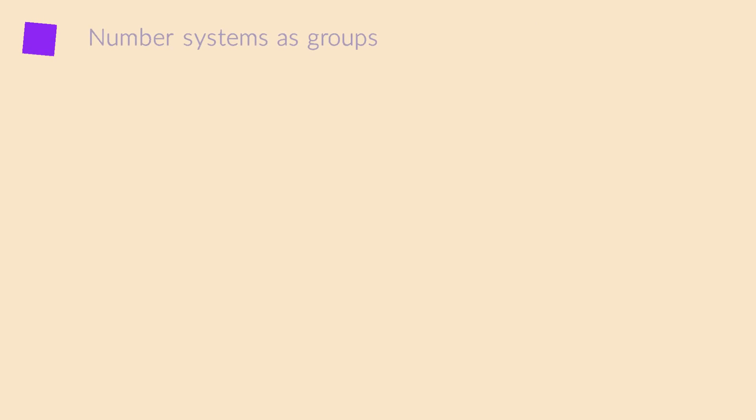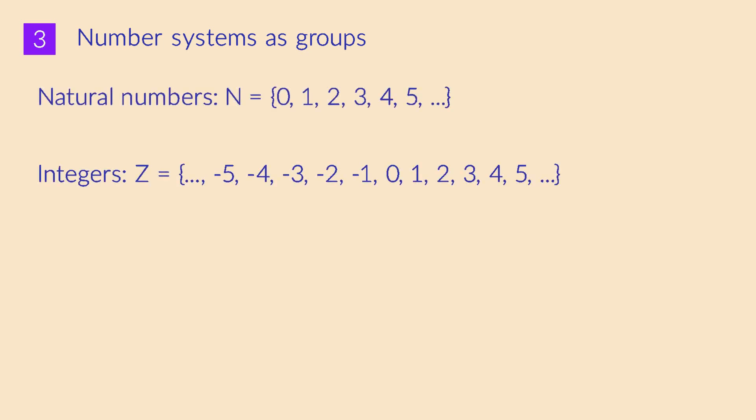I want to close this video by going over the well-known number systems, to see which ones can be turned into groups. Unlike the symmetries of a square, or the numbers modulo 12, sets like the naturals or the integers are infinite in size. That makes it impossible to draw their Cayley tables or Cayley graphs, so this part of the video is going to be a bit less visual by necessity. In the comments on an earlier video, someone pointed out that the phrase whole numbers is ambiguous, so from now on I will try to use the term integers instead. The integers are the natural numbers and their negatives.